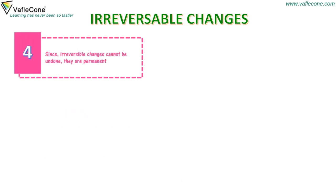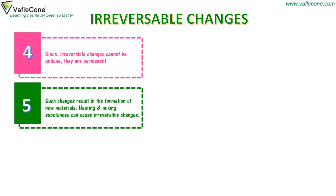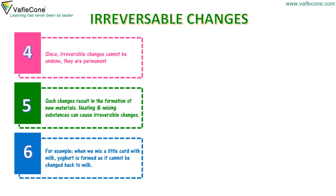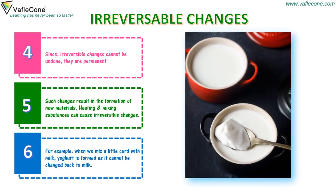Since irreversible changes cannot be undone, they are permanent. Such changes result in the formation of new materials. Heating and mixing substances can cause irreversible changes. For example, when we mix a little curd with milk, yogurt is formed, as it cannot be changed back to milk.